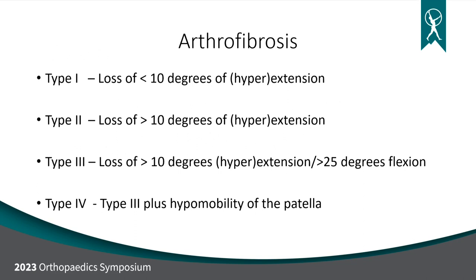Type 1 is really just a loss of extension, less than 10 degrees. Type 2 is a loss of extension greater than 10 degrees — that's pretty disabling. Type 1s are disabling; Type 2s are really disabling. When you get into Type 3 and Type 4, those are catastrophic losses of motion that can be very difficult to regain. Type 3 is greater than 10 degrees of hyperextension loss plus greater than 25 degrees loss of flexion. Type 4s are the ones that are god-awful — super stiff, patellas are stuck down; that's the knee that looks like it's been poured into cement.